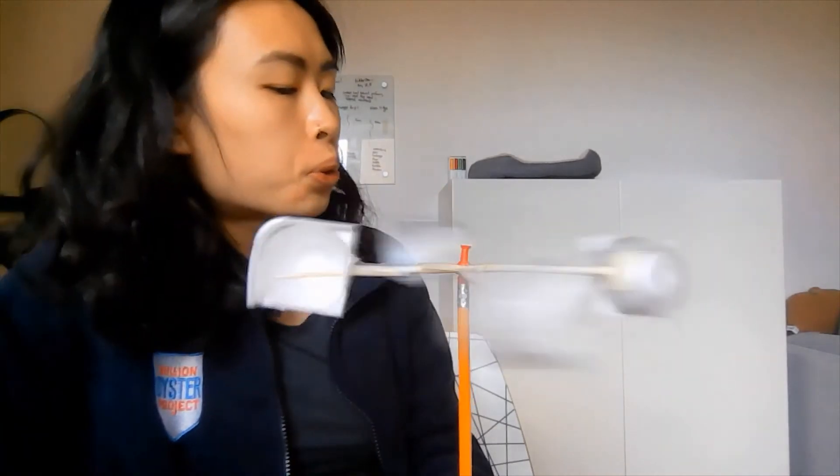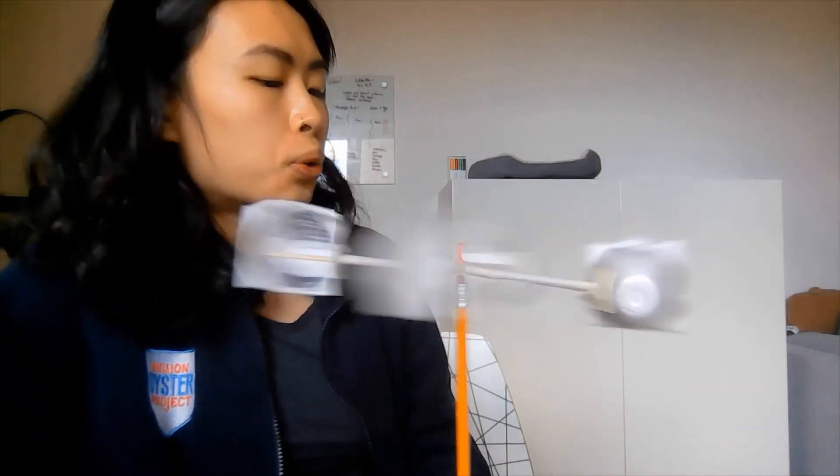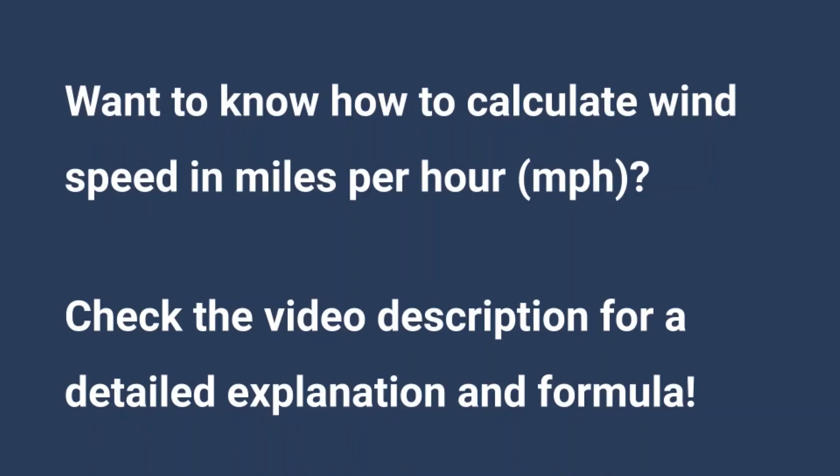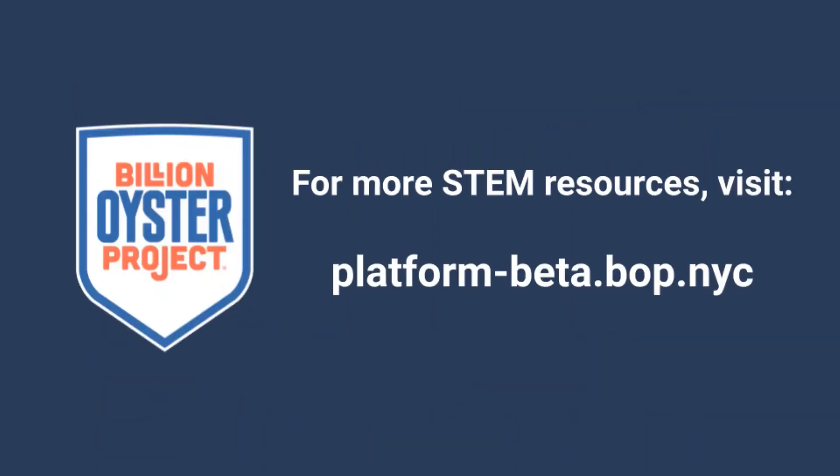That's it. You've just made a simple anemometer. If you want to calculate wind speed in miles per hour, check out this video on YouTube and open the video description for a detailed explanation. Thanks for watching and don't forget to visit BOP's digital platform for more STEM education resources.